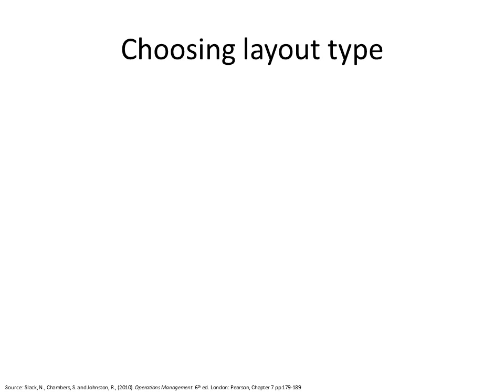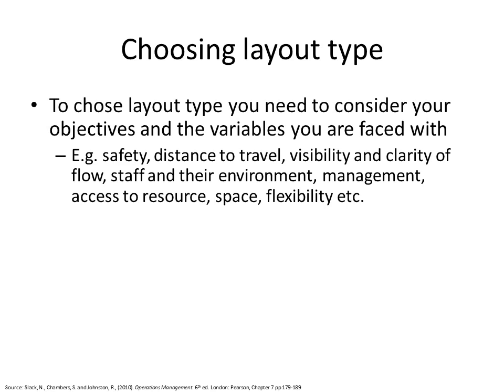How do you choose your layout type? You need to consider the objectives — what you're trying to achieve — and the variables you're faced with: safety, the distance things and people need to travel, the visibility and clarity that you have over your operation, the environment that your staff will have to work in, the access you might need to certain resources, and the space you have.